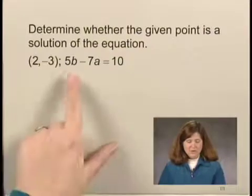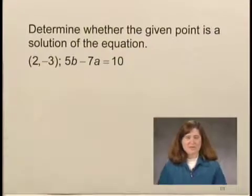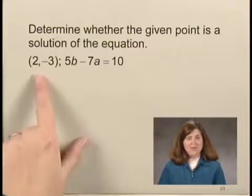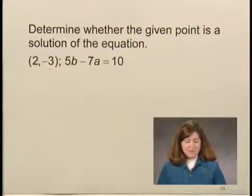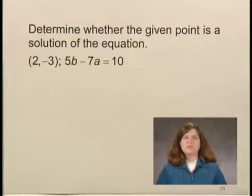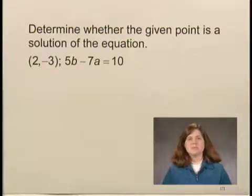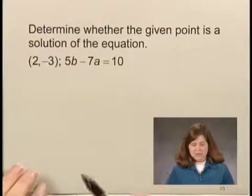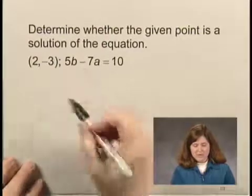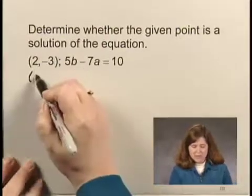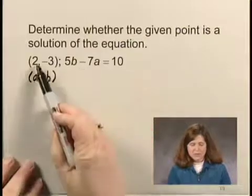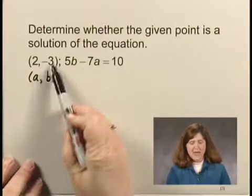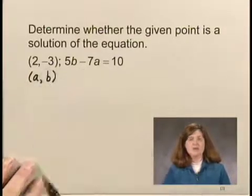The equation is 5B minus 7A equals 10. We need to substitute the values — 2 and negative 3 — for A and B. The order in which we substitute them corresponds to alphabetical order. Since the variables are A and B, I'm going to write the ordered pair as AB. So 2 will correspond to A and negative 3 to B.